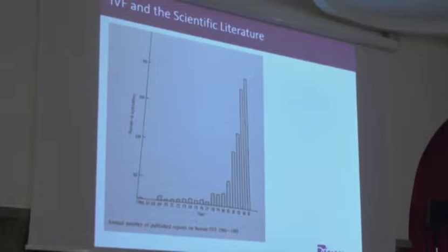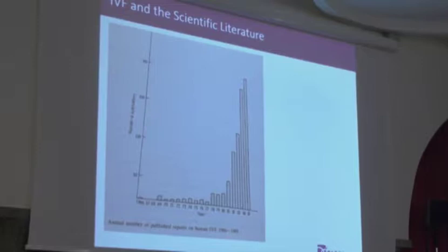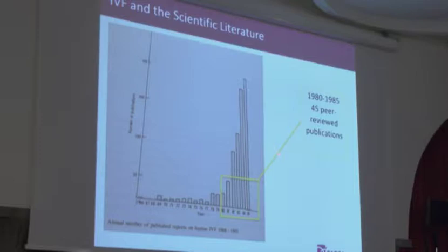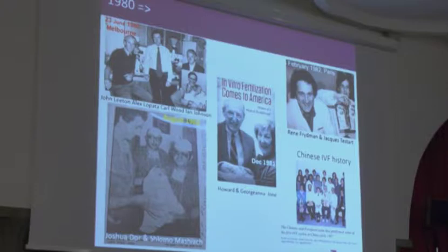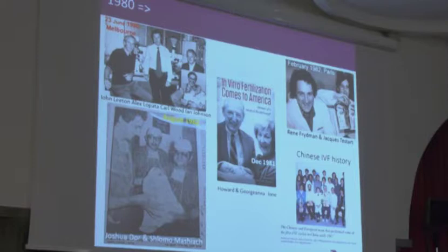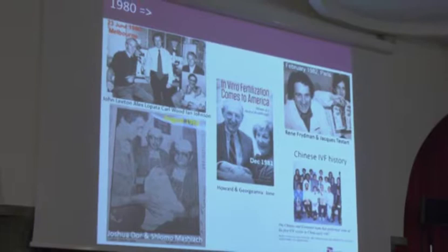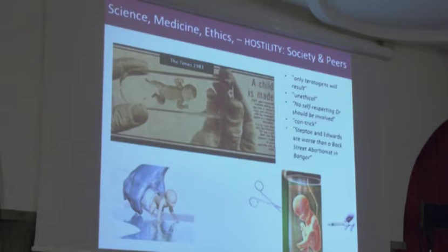This chart shows publications from back in 1966 where human IVF is mentioned, and you can see the explosion that occurred around 1980. We ourselves published 45 peer-reviewed papers between 1980 and 1985. In June 1980, the Australians had their IVF baby; in 1981, the Americans; René Frydman and Jacques Testart in 1982; the Israelis in 1982. I was fortunate to work with three Scandinavians — Carl Nagel and Mats Wikland — and we all went to China to teach IVF, achieving the first Chinese IVF baby, delivered in 1988.